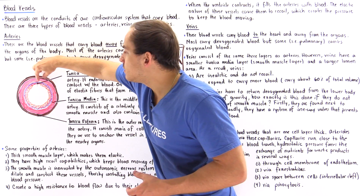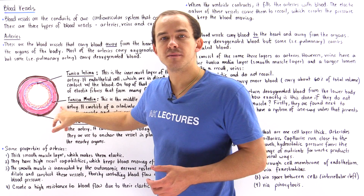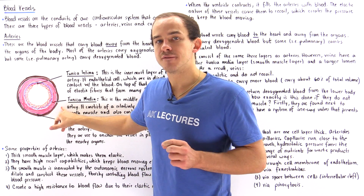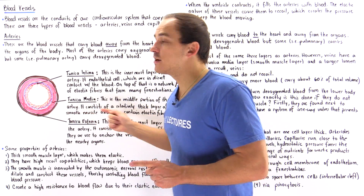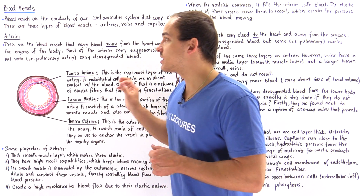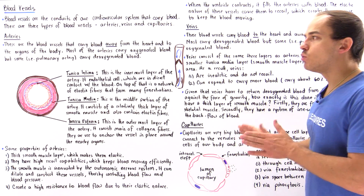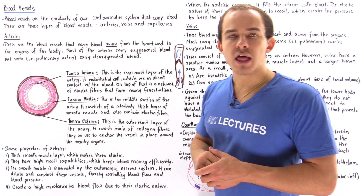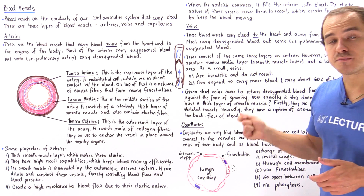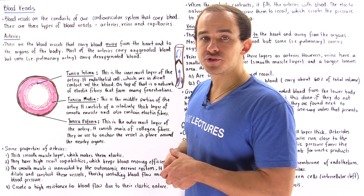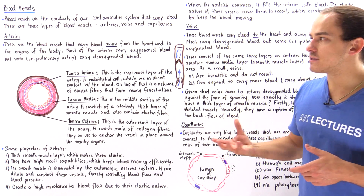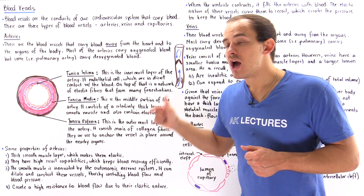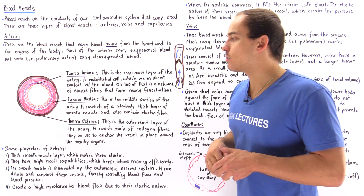The middle layer, the tunica media, is where the smooth muscle of the blood vessel is found, and in arteries this is a thick layer. So arteries contain a thick layer of smooth muscle — we'll see why that's important in a moment. The outer layer, the tunica externa, contains collagen fibers that give the blood vessel its strength and also anchor the blood vessel to the surrounding organs.